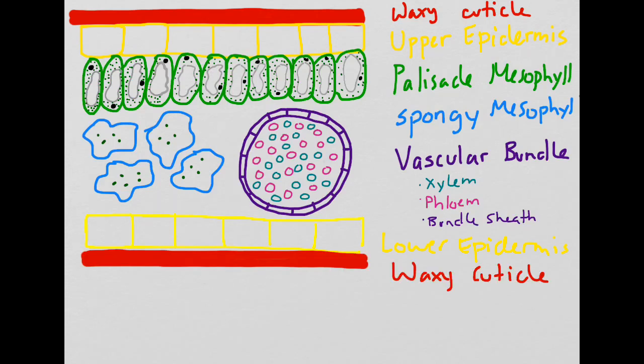Finally, underneath the lower epidermis we have one more waxy cuticle. Just like on the top, it helps to prevent water loss. So now we have a nice picture that shows all of the different layers of the leaf. But the problem is that this current leaf as it stands is completely watertight. It doesn't allow for any gas exchange.